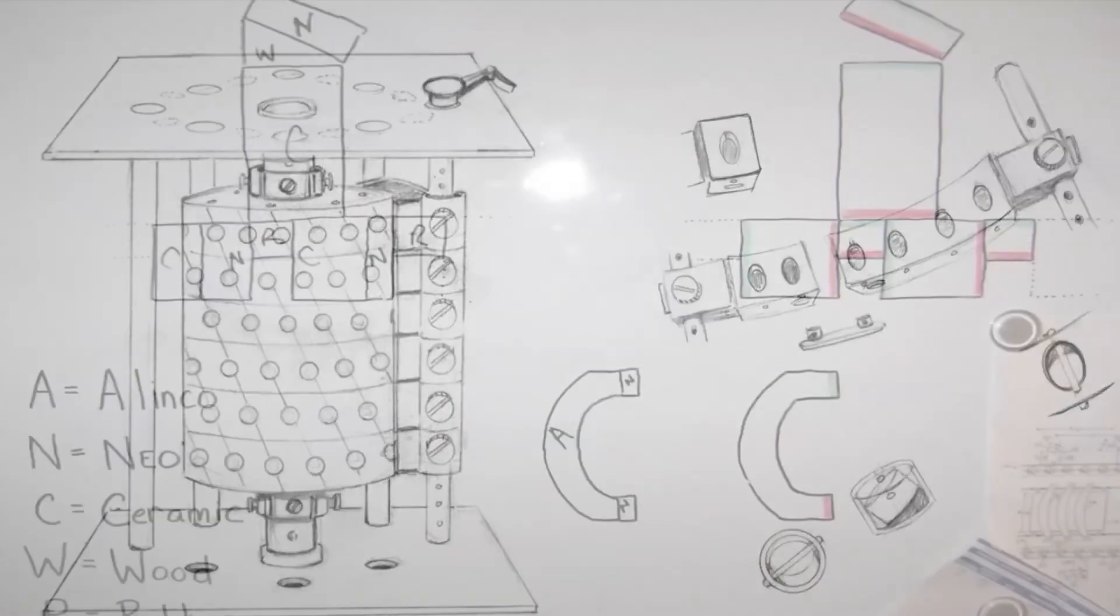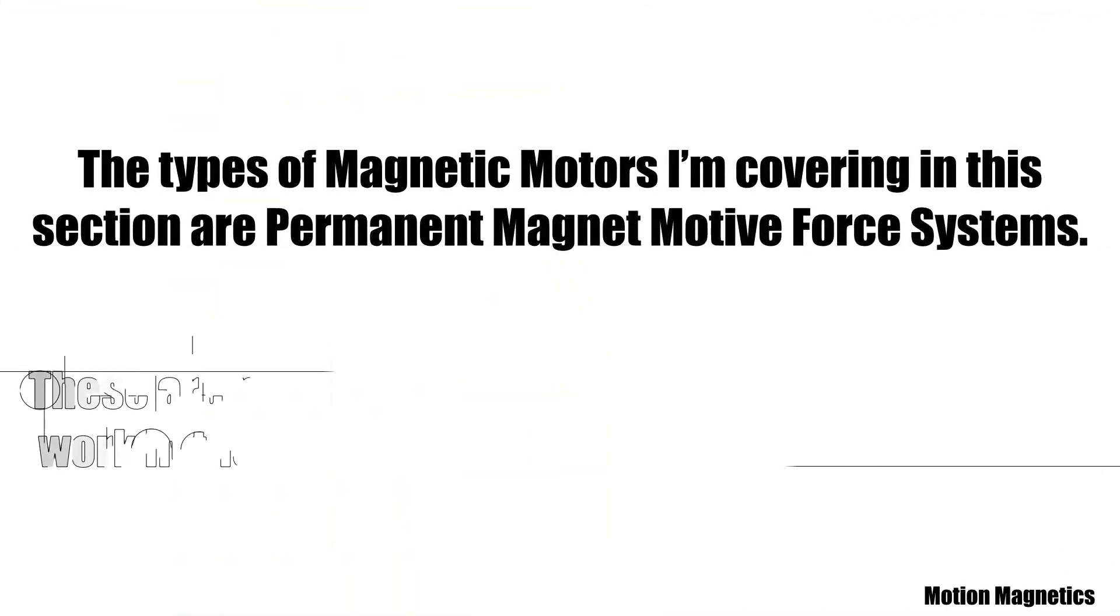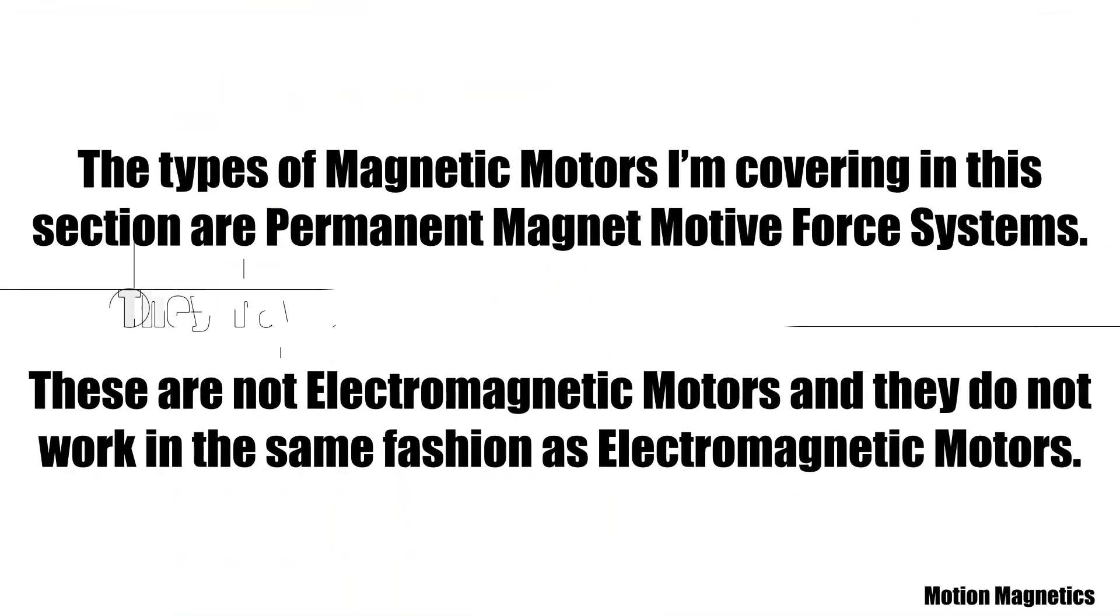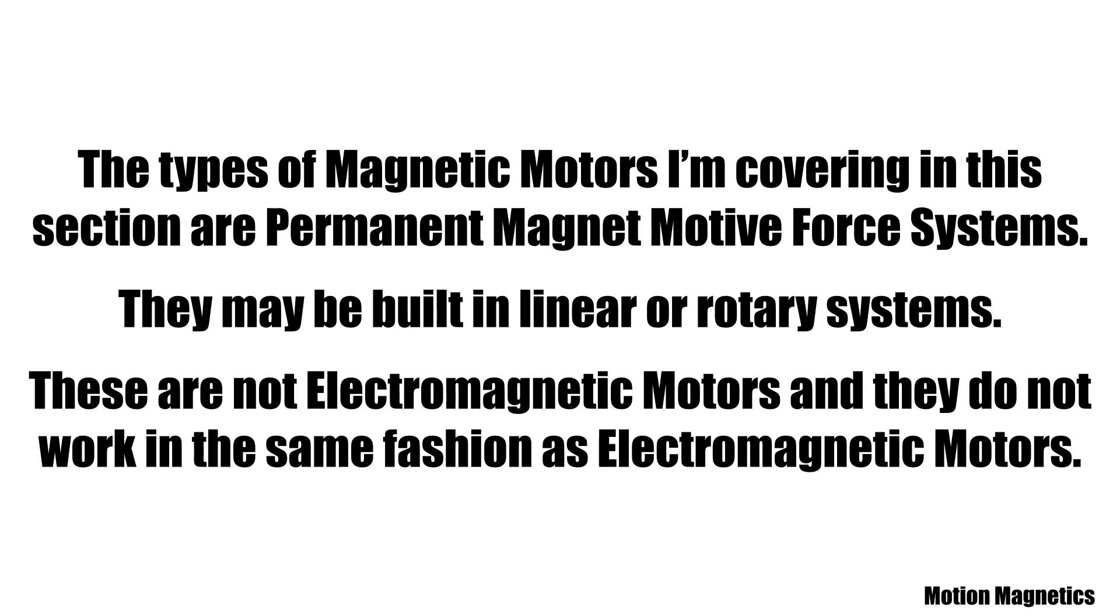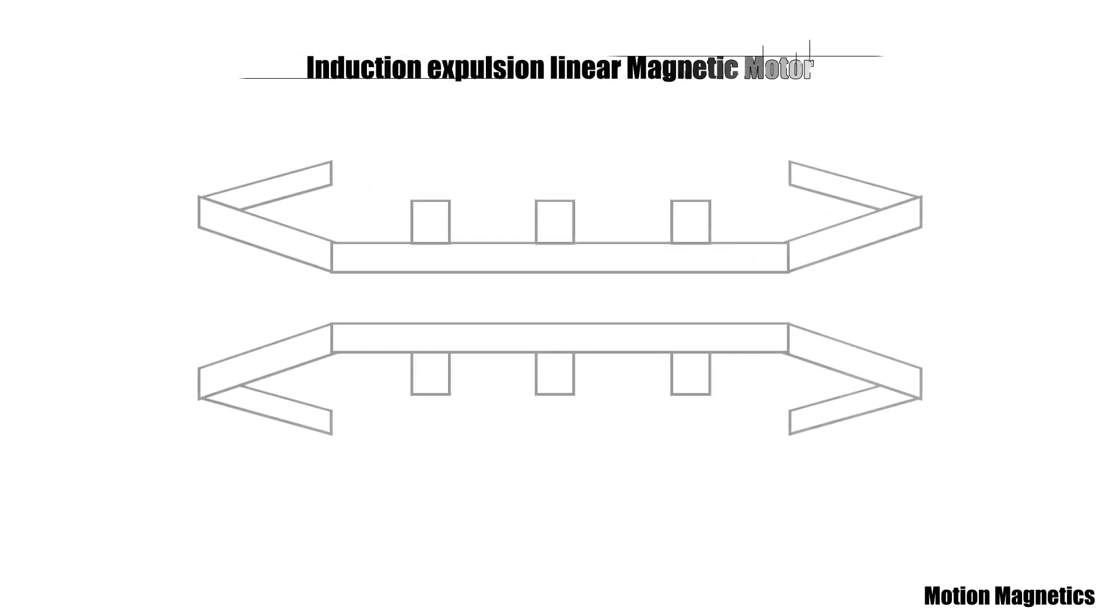Allow me to lay out some of the basics on how magnetic motors work and then I'll show you some examples to clarify. The types of magnetic motors I'm covering in this section are permanent magnet motive force systems. They may be built in linear or rotary systems. These are not electromagnetic motors and they do not work in the same fashion as electromagnetic motors.